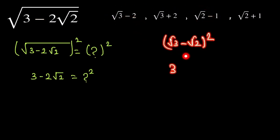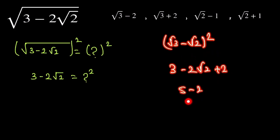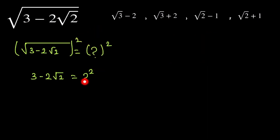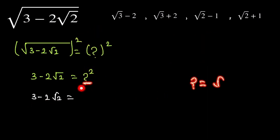Let's try (√3 - √2) and square it — it gives 5 - 2√2, and this is not our answer. So let's suppose the expression is equal to (√a - √b).